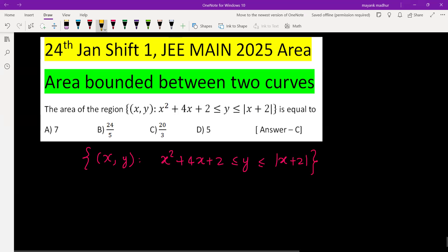The two boundary curves are y = x² + 4x + 2, which can be written as (x + 2)² - 2, and the other curve is y = |x + 2|. We need the area between them.